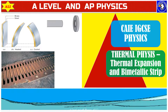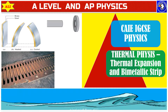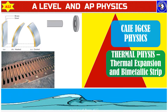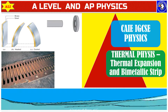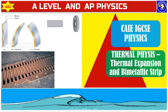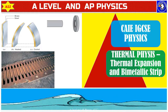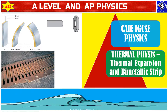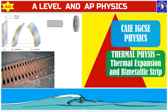Welcome to A-Level and AP Physics, a place where you can improve your understanding of physics with confidence. In today's lesson we will talk about thermal expansion and bimetallic strips from Cambridge IGCSE physics. I will explain what exactly temperature is, what the difference is between temperature and thermal energy. We will also talk about thermal expansion of solids and bimetallic strips, and at the end of the video we will do some questions from IGCSE past papers.